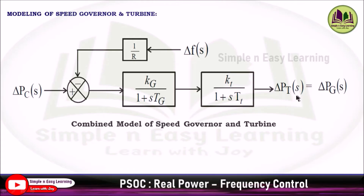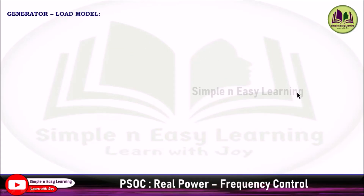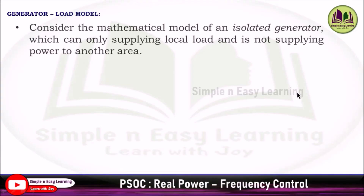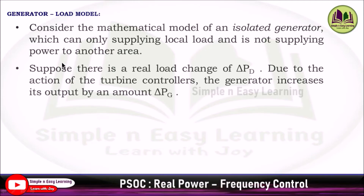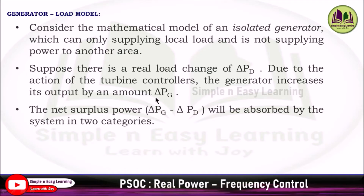The combined setup of speed governor and turbine adds the turbine block Kt/(1+s·Tt) after the governor, giving output del_Pt(s). Now for the generator-load model: consider the mathematical model of an isolated generator supplying only local load. If there is a real load change del_Pd, the generator increases its output by del_Pg. The net surplus power del_Pg − del_Pd is absorbed by the system in two categories.